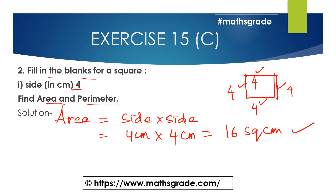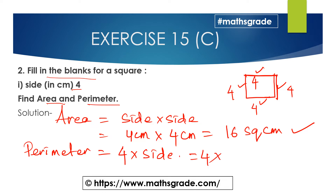Now the perimeter of the square. The formula for perimeter of a square is 4 multiplied by the side. The side is 4 centimeters, so 4 × 4 = 16 centimeters. So the perimeter of the square is 16 centimeters and the area is 16 square centimeters.